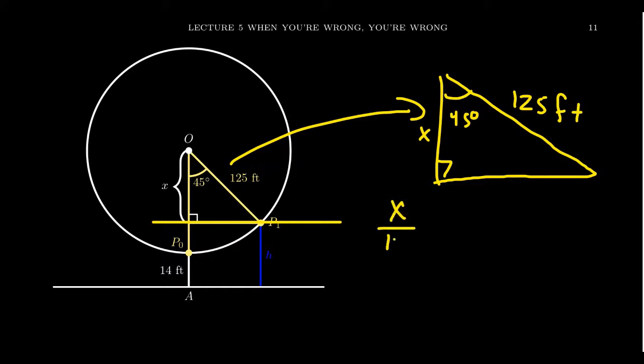Notice if we get X over 125, this is going to equal cosine of 45 degrees. If we solve for X, we're going to get that X equals 125 times cosine of 45 degrees. So that figures out this distance X.